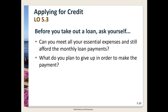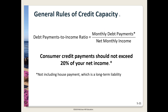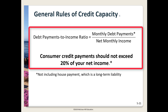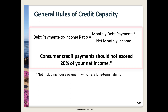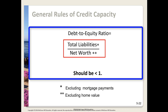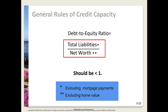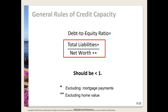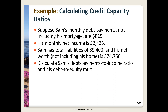So can you afford a loan? Basic considerations: can you meet all your essential expenses and make the loan payments? What are you planning to give up to make the payments? There are two general rules of credit capacity. Rule one: your debt-payments-to-income ratio should not exceed 20% of your net income — 15% is better, 20% is the max. This refers to consumer credit payments and does not include a mortgage payment. Rule two: your debt-to-equity ratio should be less than one — you should have more net worth than liabilities. Debt-to-equity is total liabilities divided by net worth; your mortgage is excluded from the numerator and the value of your home from the denominator.